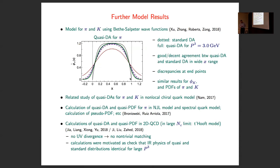I found it interesting that two groups this year calculated quasi-distribution amplitudes and quasi-PDFs in two-dimensional QCD — more precisely in the large-Nc limit, which is the 't Hooft model. The motivation is: since 2D QCD has basically no UV divergences, you would expect that if you calculate quasi and standard distributions and take the momentum to infinity without any need for perturbative matching, the results are the same. This is what they found, and they argue it's an even stronger test because the infrared divergences are more severe in the two-dimensional model.